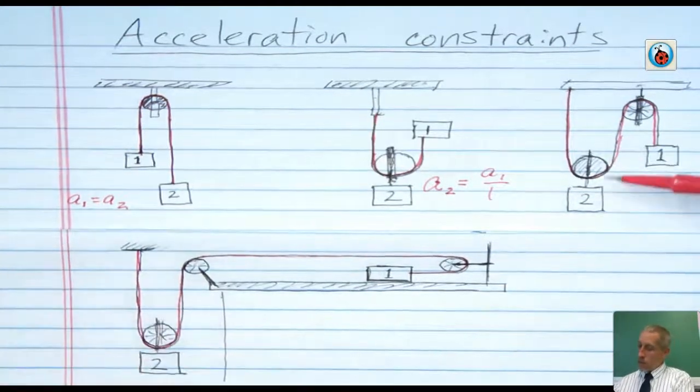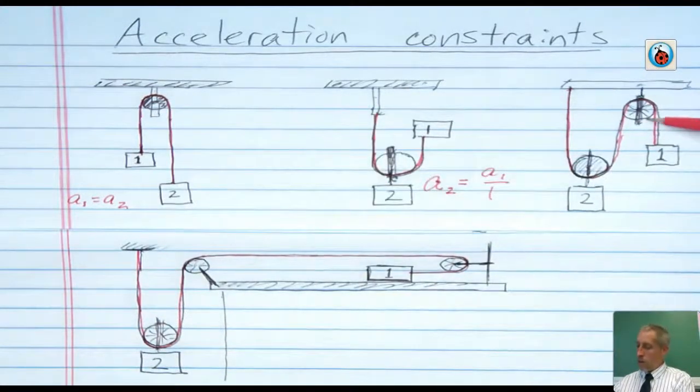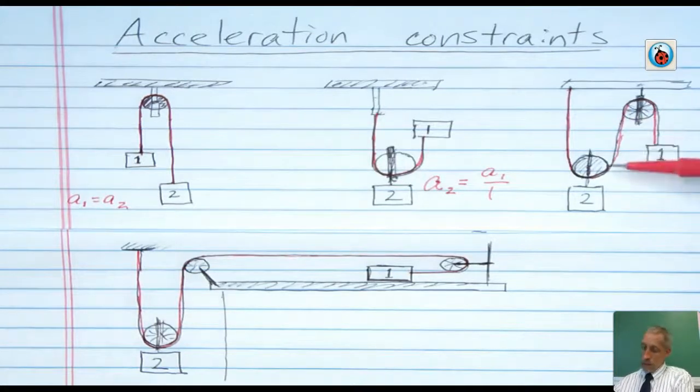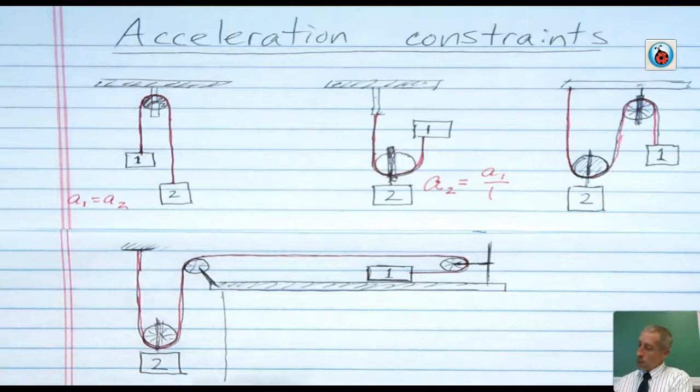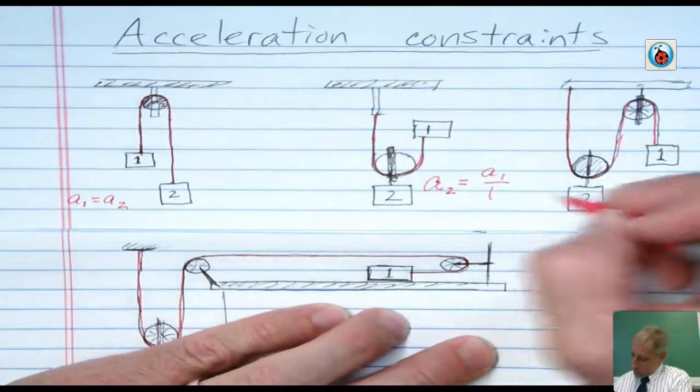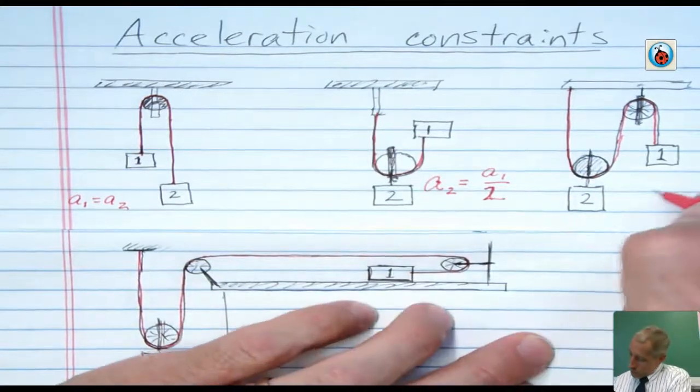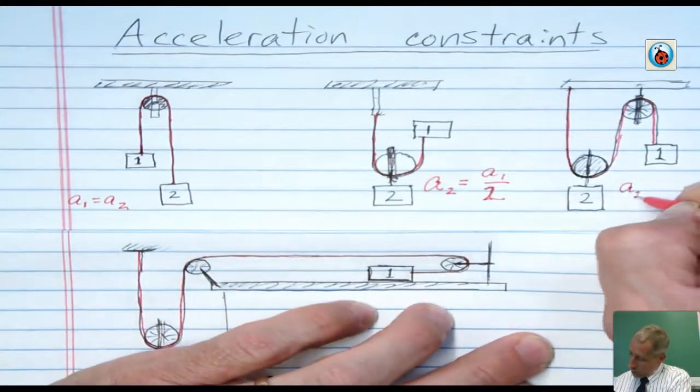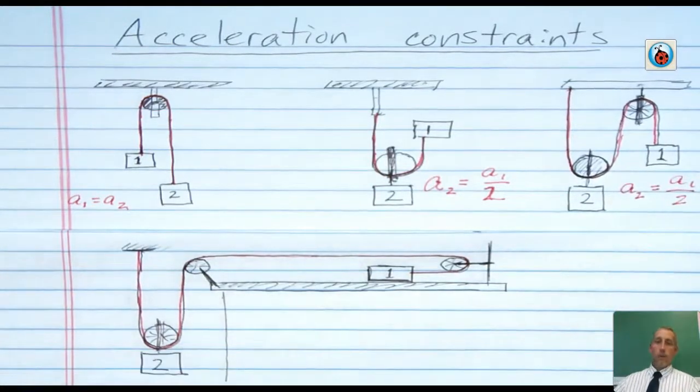And what I did here in the third system is I actually made a combination of the first two. And so this fixed pulley up here, where we're just winding around, does nothing to the acceleration. All it does is it changes the direction of the force from up to down or down to up. But here again, we have this movable pulley where we've attached mass number two, and that provides the same kind of acceleration constraint that we had over here. So, and then I just noticed that should be a two there. Did you notice that? You were probably wondering what I did. So here again, we have A2 is A1 divided by two or half of A1.